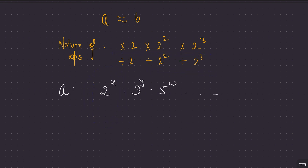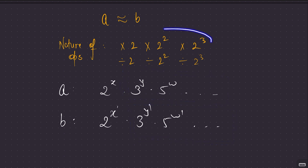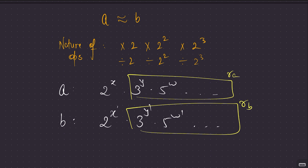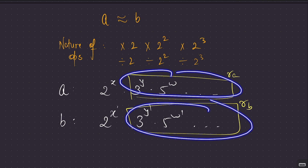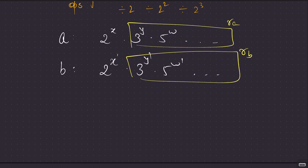So if B's prime factorization is 2^x' · 3^y' · 5^w' · ..., and the non-2 portion of A differs from the non-2 portion of B, you can never convert A to B. None of our operations can change any prime factor other than 2. Let's call the remaining portion (excluding the power of 2) RA for A and RB for B. If RA ≠ RB, the answer is -1.